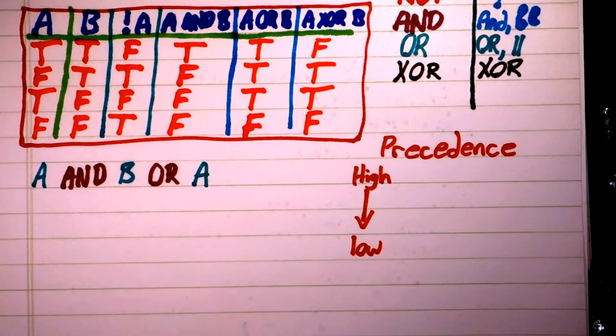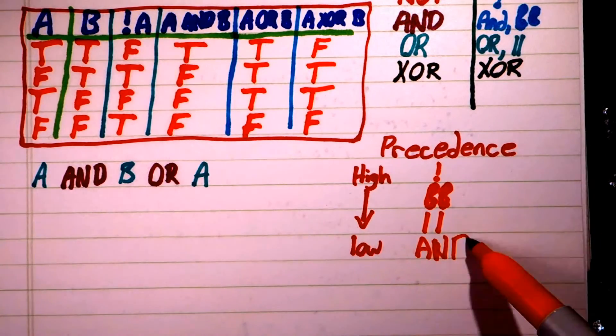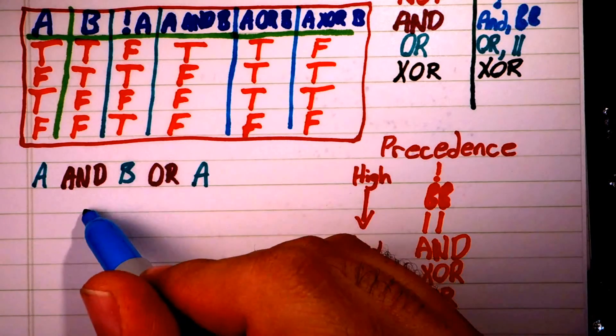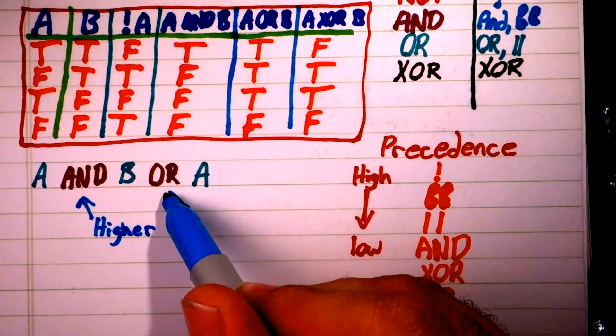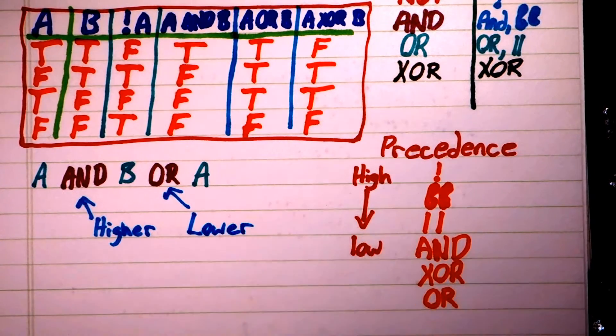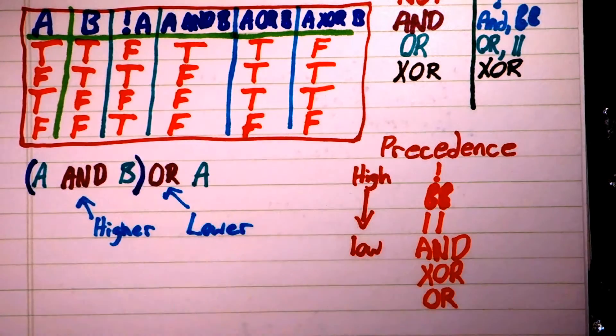To see that, we need to list the operators in order of decreasing precedence. For example, in A AND B OR A, AND has the highest precedence. So this becomes A AND B grouped together OR A.